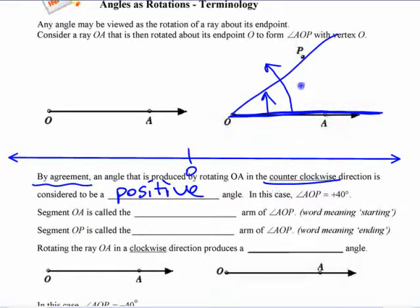This angle is positive 40 degrees. This starting arm here, word meaning starting, is called the initial. The word initial means start. Initial means start.